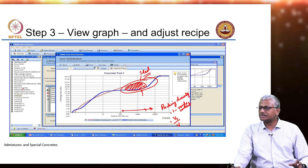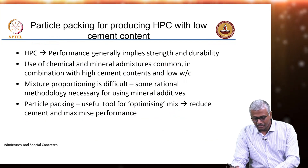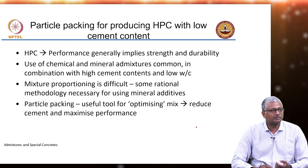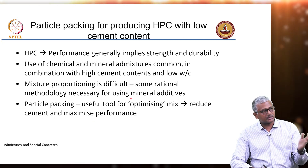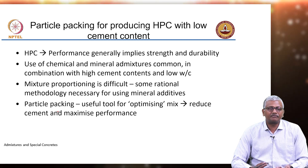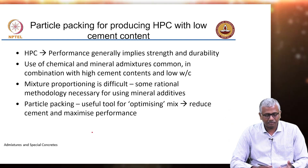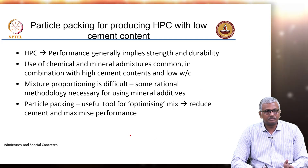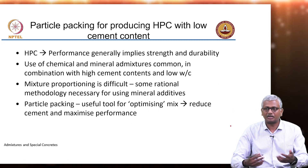The assumption is that particles packed ideally will give you maximum strength and help design the concrete for appropriate workability. Let us look at an example of how this approach was used to produce high performance concrete with low cement content. Generally, high performance means high strength and durability — people interchangeably use HSC and HPC, but truly performance should imply more than strength, it also means durability. We always have high cementitious contents, mineral admixtures, and chemical admixtures in high strength and high performance concrete. The idea here was to use particle packing to cut down the number of trials required and also minimize the extent of cement used.